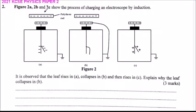Question number two: Figure 2a, 2b, and 2c show the process of charging an electroscope by induction. In figure A, a negatively charged polythene rod is brought near the plate, which becomes positively charged, and the leaf is diverged because it is negatively charged. Then, the plate is earthed.